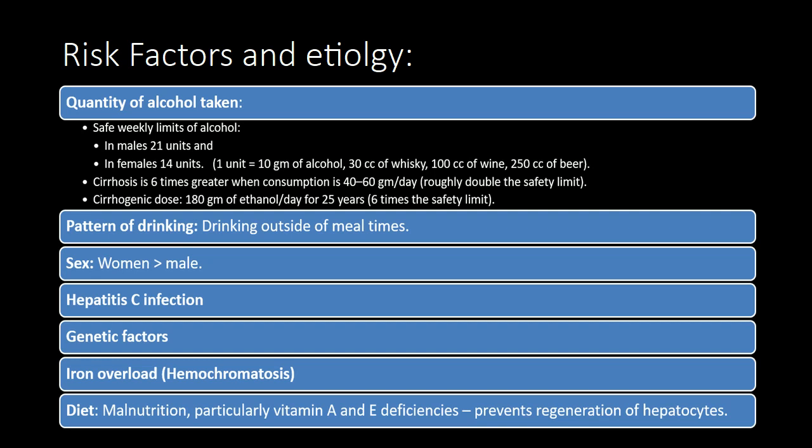Cirrhosis is associated with 180 grams of ethanol per day for 25 years, about 6 times the safety limit. Pattern of drinking: drinking outside of meal times increases up to 3 times the risk of alcoholic liver disease. Sex: women are twice as susceptible to alcohol-related liver disease and may develop alcoholic liver disease with shorter durations and doses of chronic consumption.